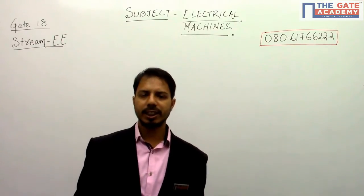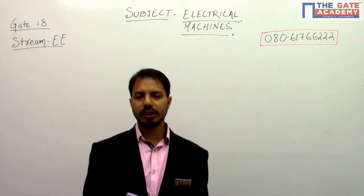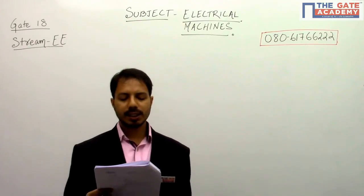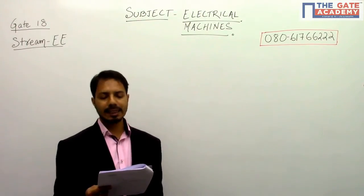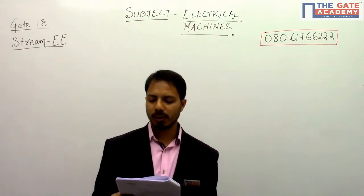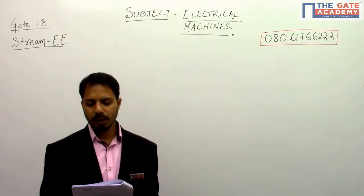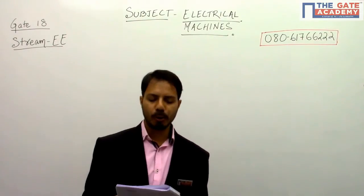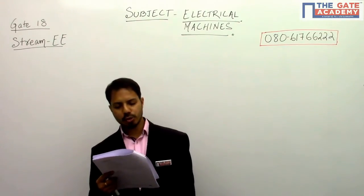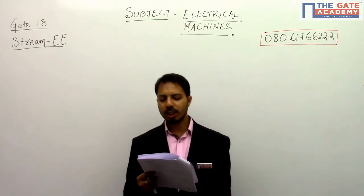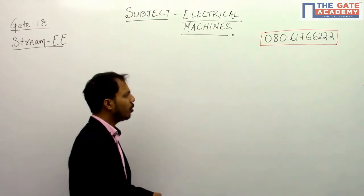This question is from Electrical Machines 2018, a two-marks question from transformer. It says: a three-phase 900 kVA, 3 kV by root-3 kV, delta-star, 50 Hz transformer has primary resistance per phase of 0.3 ohm and secondary resistance per phase of 0.2 ohms. Iron loss is given as 10 kilowatt. Find the full load efficiency at unity power factor, correct to two decimal places.